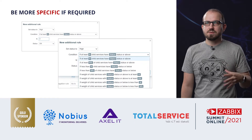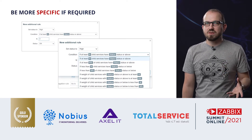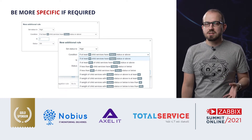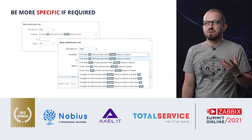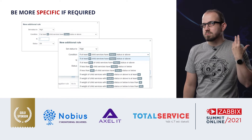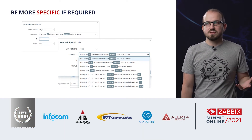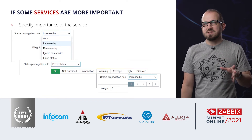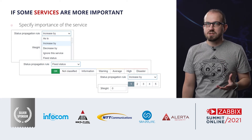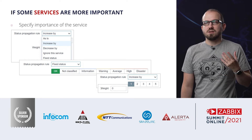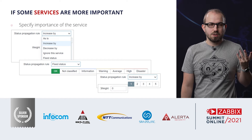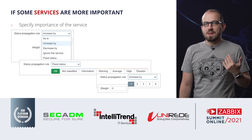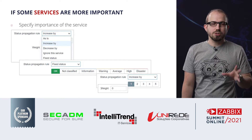You can specify how the service will be affected — should the status be set to something specific like warning, average, high, or disaster. You can specify how important each service is, and you can define some new advanced conditions. For example, if at least some specific number of child services is affected, only then the parent service is affected. Or if less than a number, or if some specific percentage, or if it's a weight. We specify how the rule will be propagated from the child service to the parent service — how strongly the child service affects it. We can define maybe it should be a fixed status, and then the parent service status will not change no matter how severe the situation is with the child services.